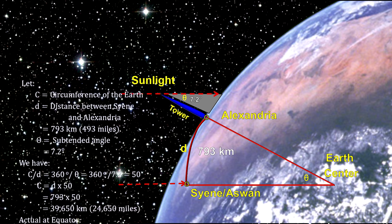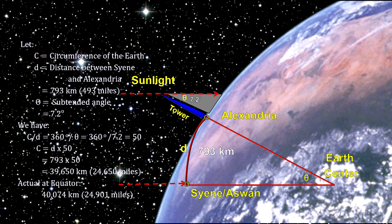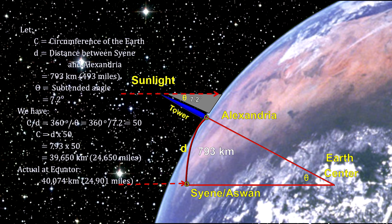Thus, the circumference can be estimated by multiplying the distance between the two cities by 50, which equals 39,650 km. The actual number at the equator is 40,074 km. So, he was only 1% off.